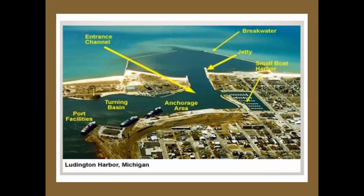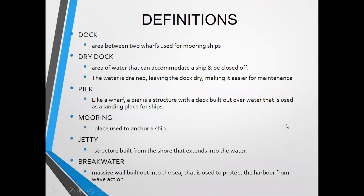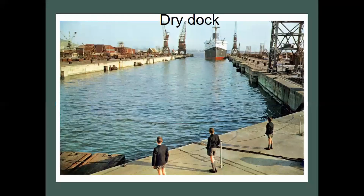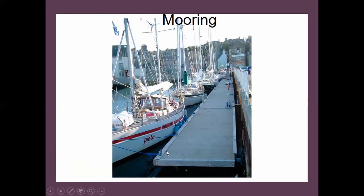This is a typical harbour. Starting with definitions: a wharf platform is where loading and unloading of ships take place — it's the wooden section. Then you get your dock, which is the area between those wharves used for mooring of ships. Then you get a dry dock and your pier, which is very similar to your wharf. A mooring is the place you anchor your ship. Then you get a jetty and a breakwater. The pier area extends out into the water, and a mooring is where you tie your boat up.